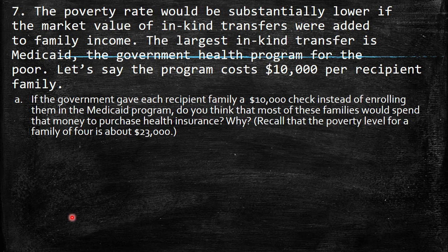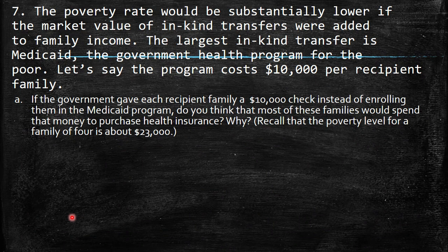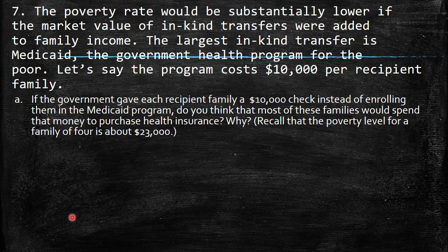Question 7: The poverty rate would be substantially lower if the market value of in-kind transfers were added to family income. The largest in-kind transfer is Medicaid, the government health program for the poor. Let's say the program costs $10,000 per recipient family. If the government gave each recipient family a $10,000 check instead of enrolling them in Medicaid, would most families spend that money to purchase health insurance? Note that the poverty level for a family is about $23,000.